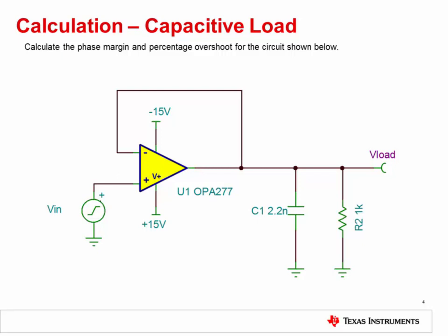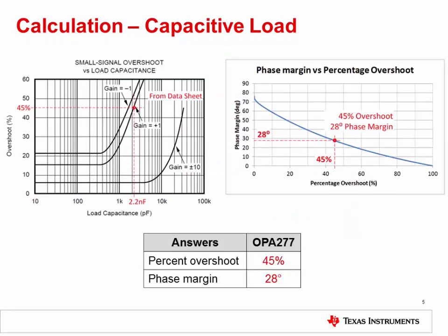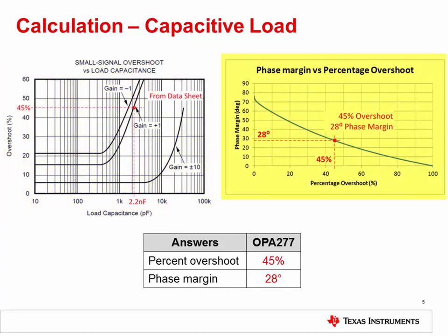First, calculate the phase margin and percentage overshoot for the circuit shown here using the techniques and equations given in the stability video series. Use the plots given on the next slide. This circuit uses the OPA277. In order to perform the calculations, you need to know the percent overshoot versus load capacitance for that device shown on the top left. Then use the plot on the right to determine the phase margin from that percentage overshoot. Enter your answers in the table at the bottom of the slide. The solutions are already provided to allow you to check your work.